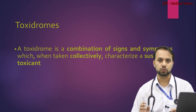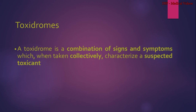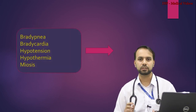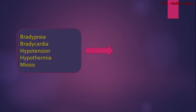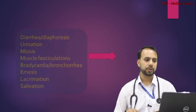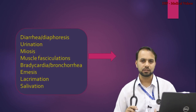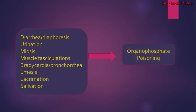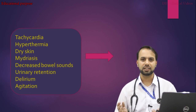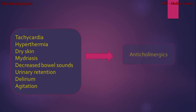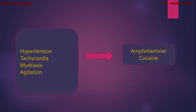Toxidromes are combinations of signs and symptoms that collectively characterize a suspected toxicant. Key toxidromes: bradypnea, bradycardia, hypotension, hypothermia, and miosis indicate opioid poisoning. Diarrhea, diaphoresis, urination, miosis, muscle fasciculation, bradycardia, bronchorrhea, emesis, lacrimation, and salivation (DUMBELS) indicate organophosphate poisoning. Tachycardia, hyperthermia, dry skin, mydriasis, decreased bowel sounds, urinary retention, and delirium indicate anticholinergic poisoning. Hypertension, tachycardia, mydriasis, and agitation indicate amphetamine or cocaine poisoning.